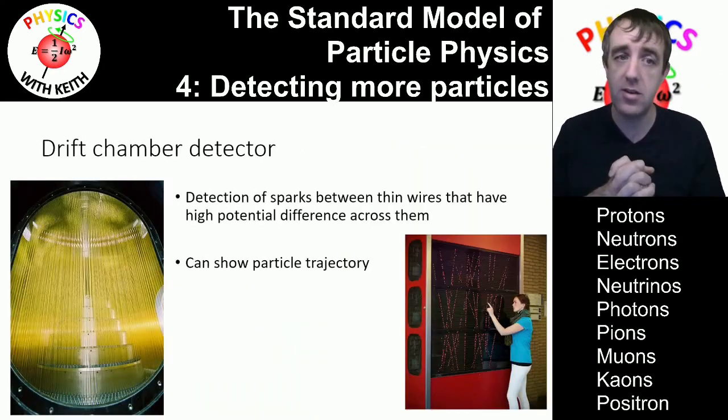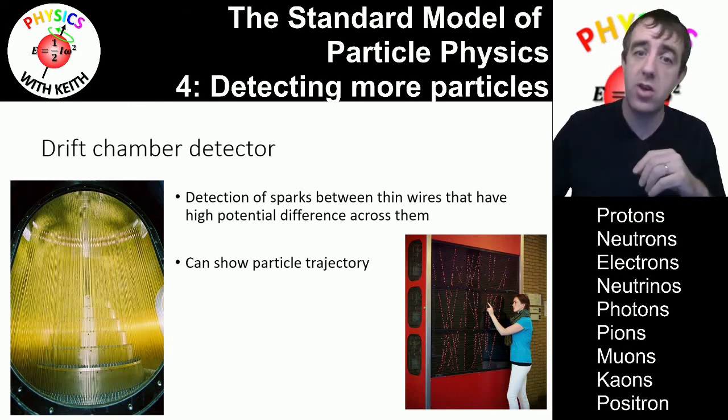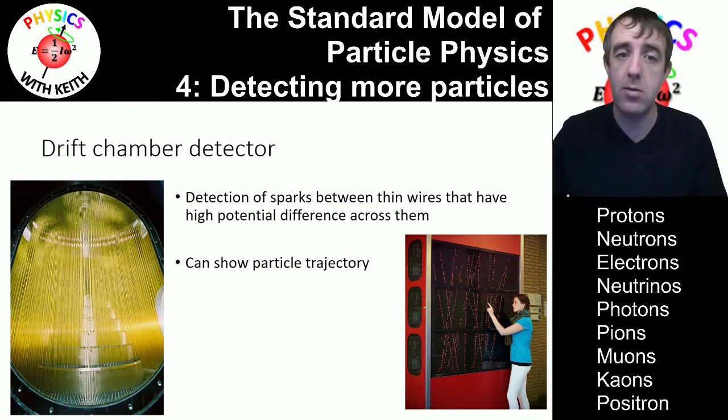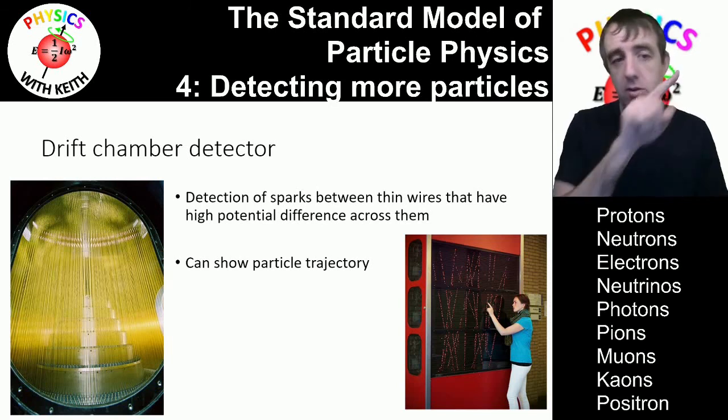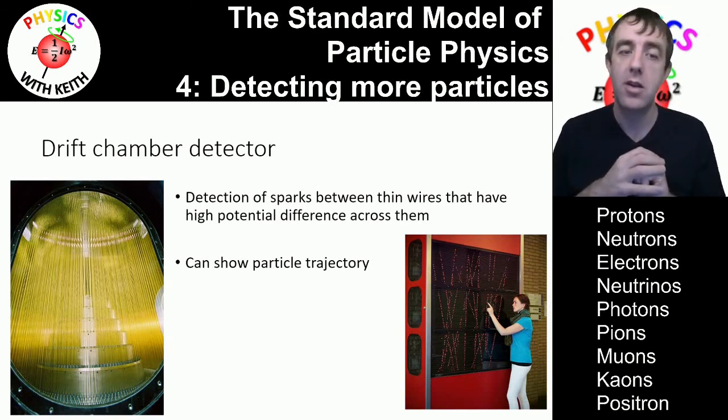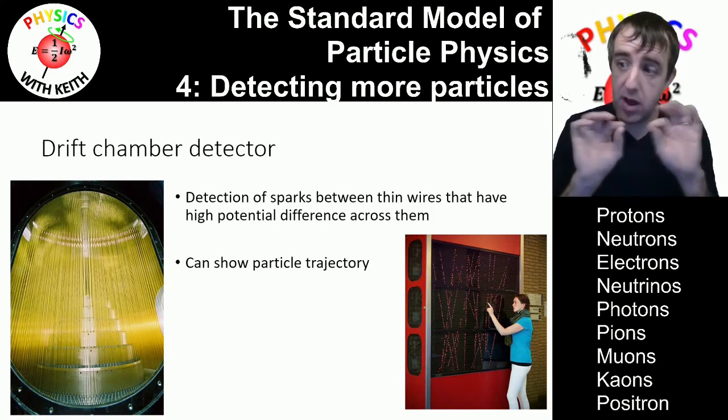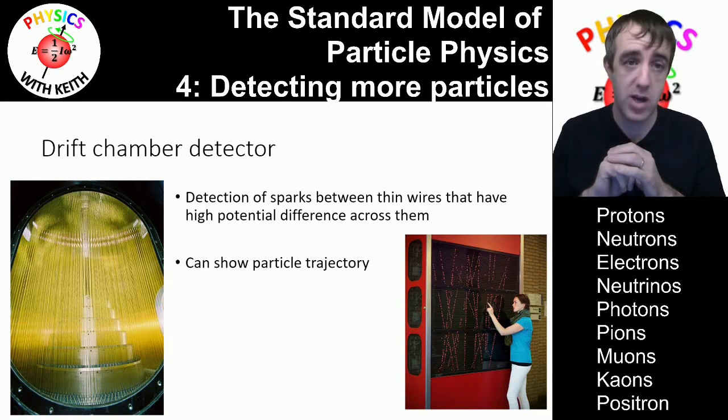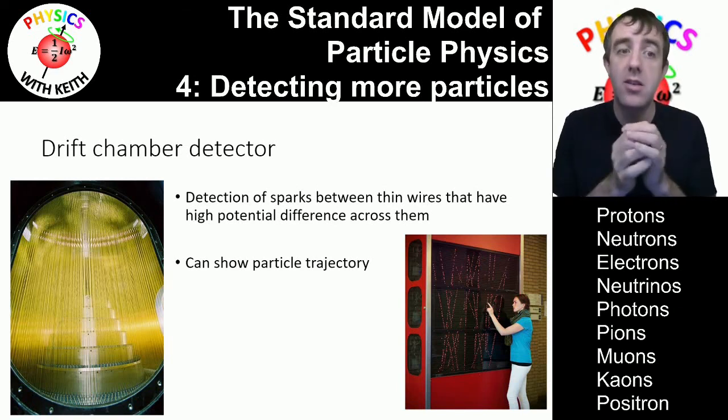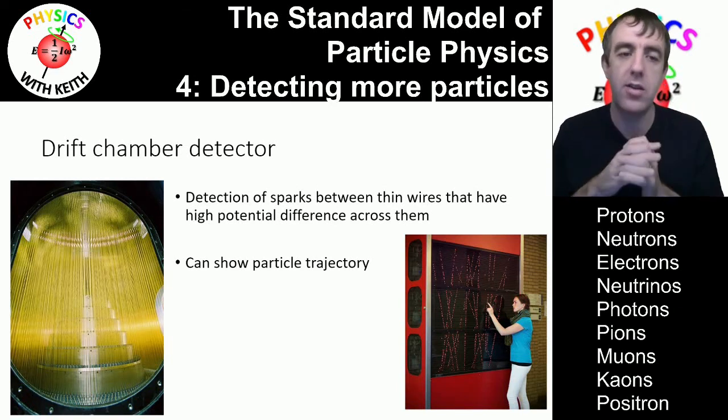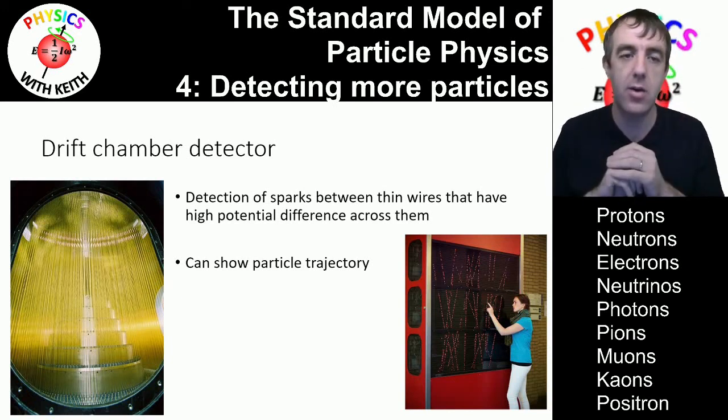But there are other sorts of detectors. For example, this drift chamber detector, which has wires with a huge potential difference between them. If charged particles pass between those wires, they can cause the air between those wires to ionise, which means you get a spark. That spark is a flow of charge. So you can detect tiny little peaks in current between these wires and use that to track where the particle is going.